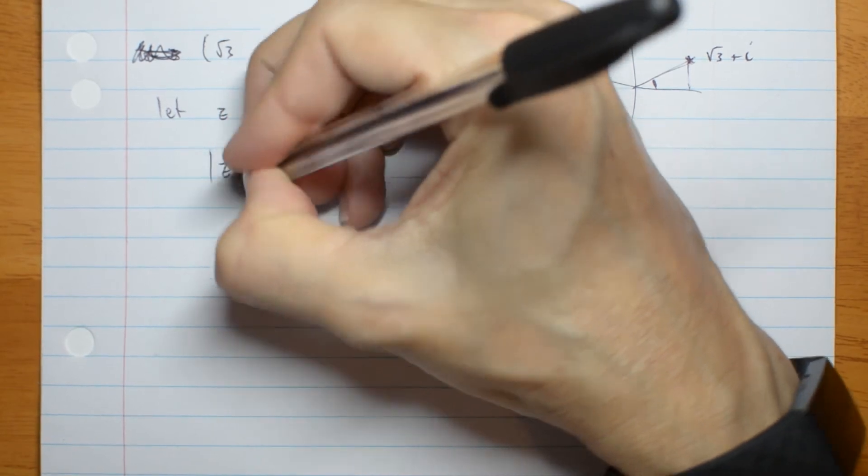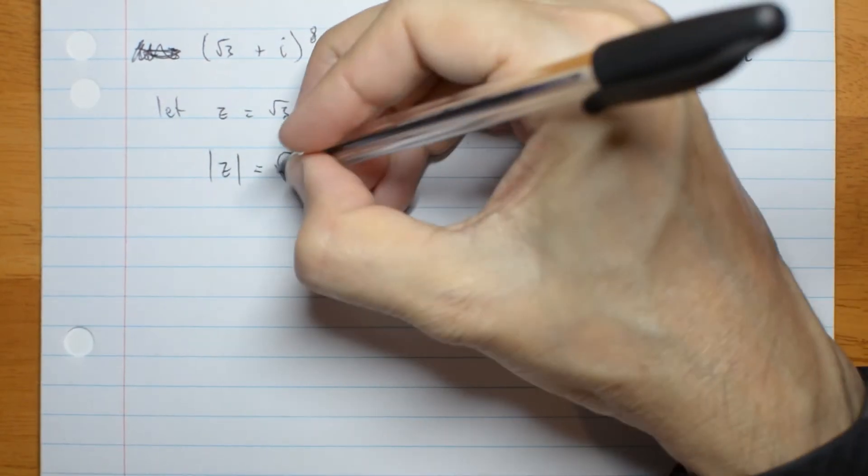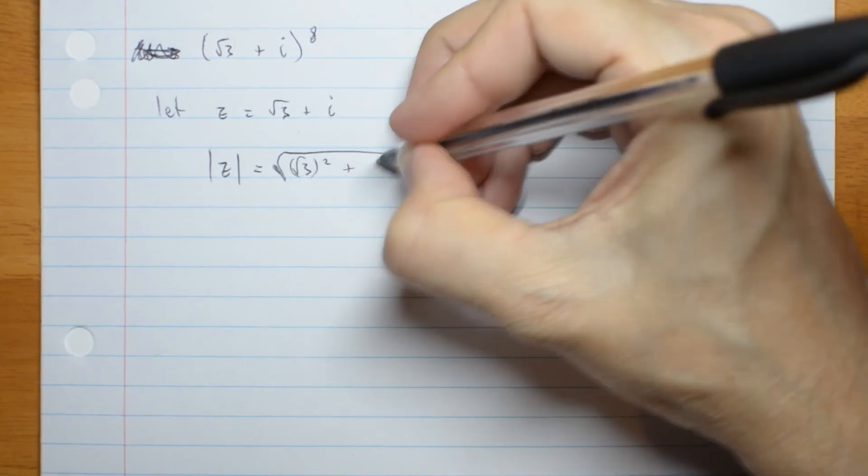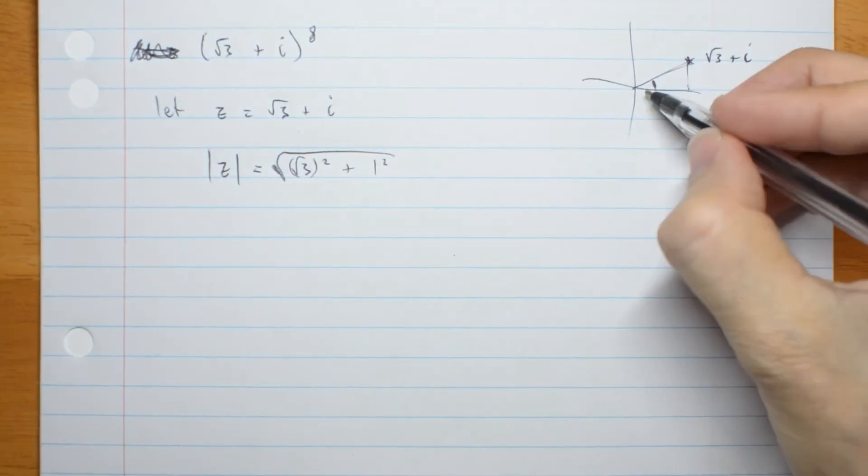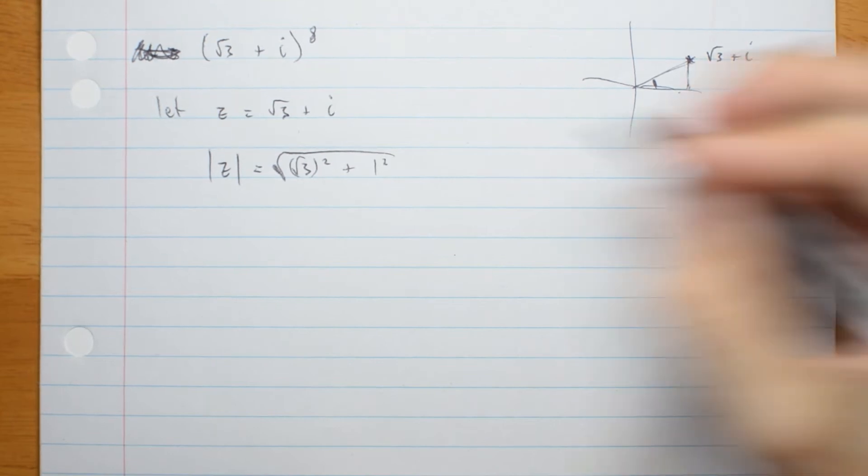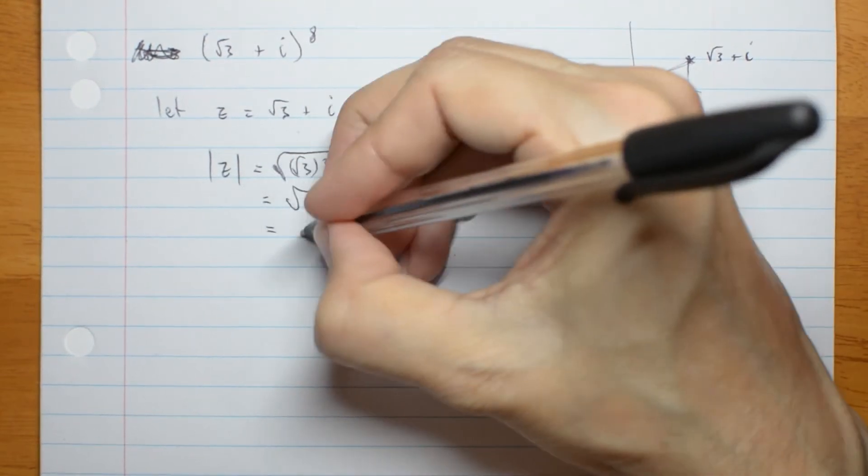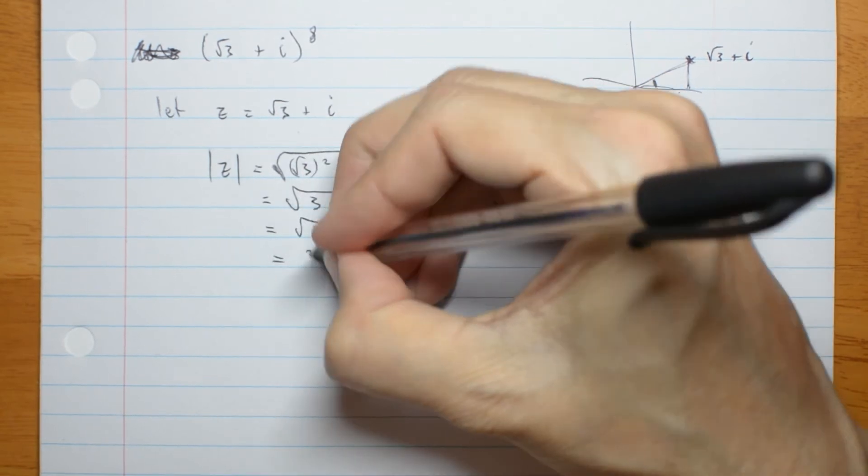Then the modulus of z is the square root of root 3 squared plus 1 squared. Well that's the square root of 3 plus 1, which is the square root of 4, which is 2.